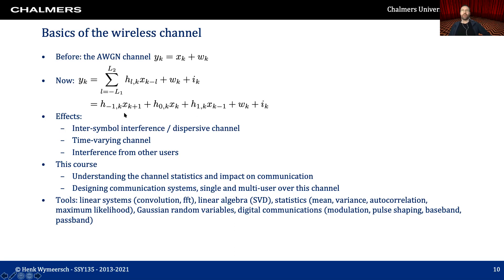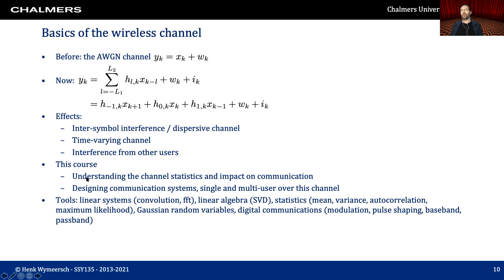We will talk a lot about how to model this channel — how the H's change over time and frequency, how to estimate them, and how to recover data from the observation. The observation suffers from inter-symbol interference: each observation depends on past and possibly future transmitted symbols, so the channel is dispersive. The channel also varies over time — that's the k dependence; without it the channel would still be dispersive but stationary. There could also be interference from other users. The first part of this course is to understand how this channel works statistically and to design a good communication system for it, relying on tools from linear systems, linear algebra, statistics, random variables, and digital communications.